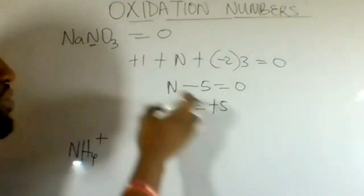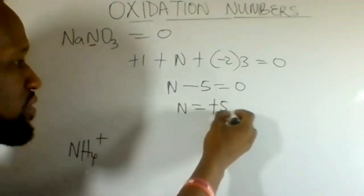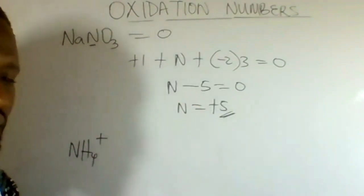Therefore, this compound is sodium trioxonitrate 5, NaNO₃.